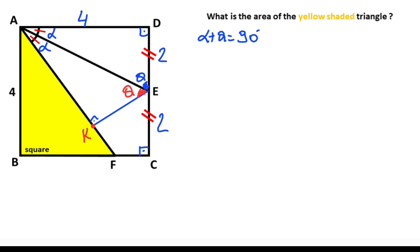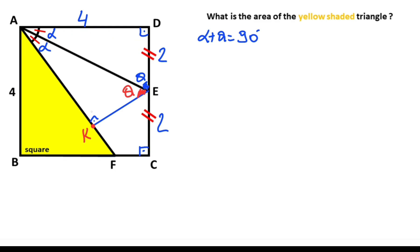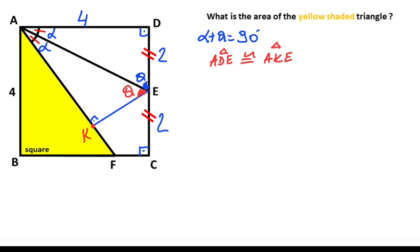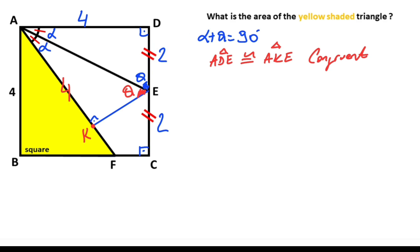Let's call this point K. Notice that this triangle and this triangle have the same angles, and these two triangles have the same hypotenuse. That means these two triangles are congruent — triangle ADE and triangle AKE are congruent. Therefore, if there are four units opposite theta in one triangle, the side opposite theta must also equal four units in the other. Likewise, if there are two units opposite alpha, the side opposite alpha must also equal two units.